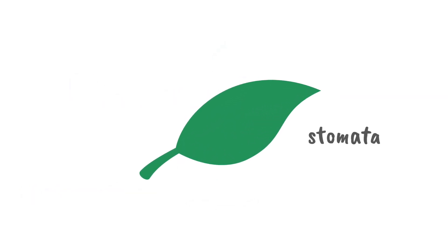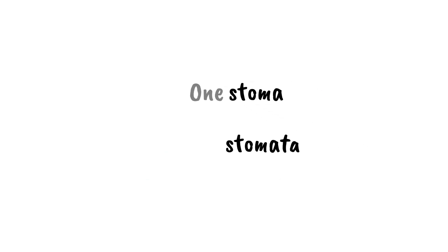Stomata are the tiny holes on the underside of leaves that allow gases to enter and exit. By the way, the grammar might not work the way you expect for these. It's one stoma, many stomata. Stoma is singular and stomata is plural.